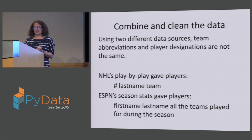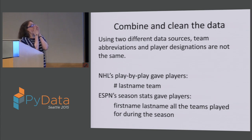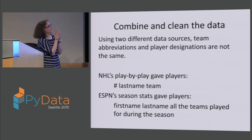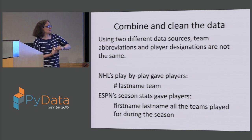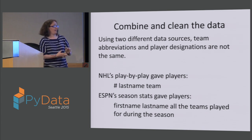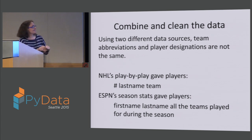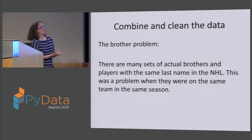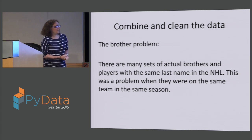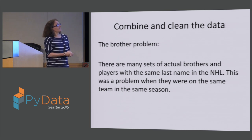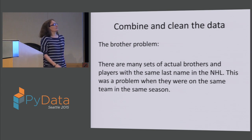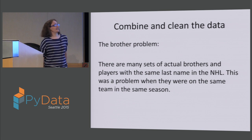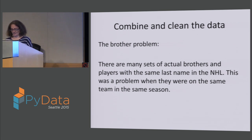Using two different data sources led to some confusion when I went to combine the data. NHL gave players by their number, last name, and team. ESPN stats gave players by first name, last name, and all the teams they played for during the season. It wouldn't be a problem to match them if there was only one guy on the team with that last name — but this is what I'm calling the 'famous computer science brother problem,' where there are lots of people with the same last name on the same team. So I had to come up with a strategy to make sure I was matching up the right stats with the right guy.